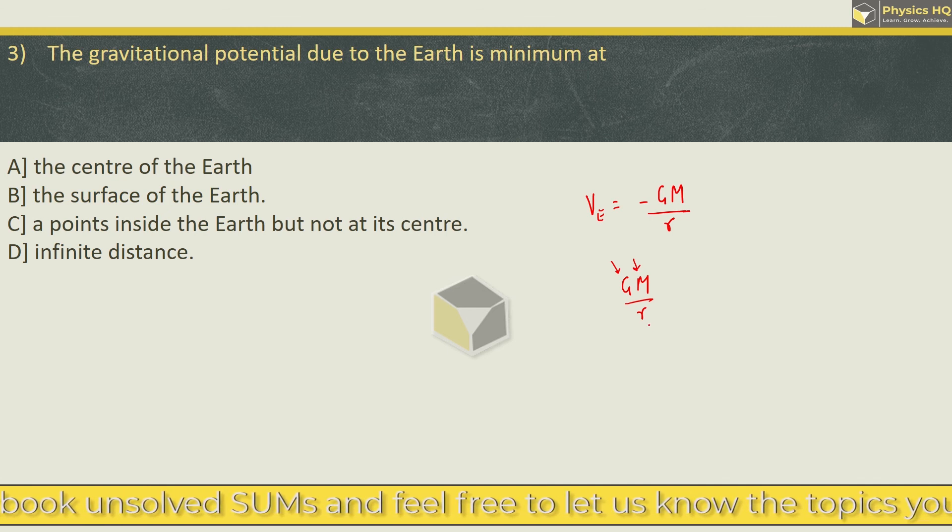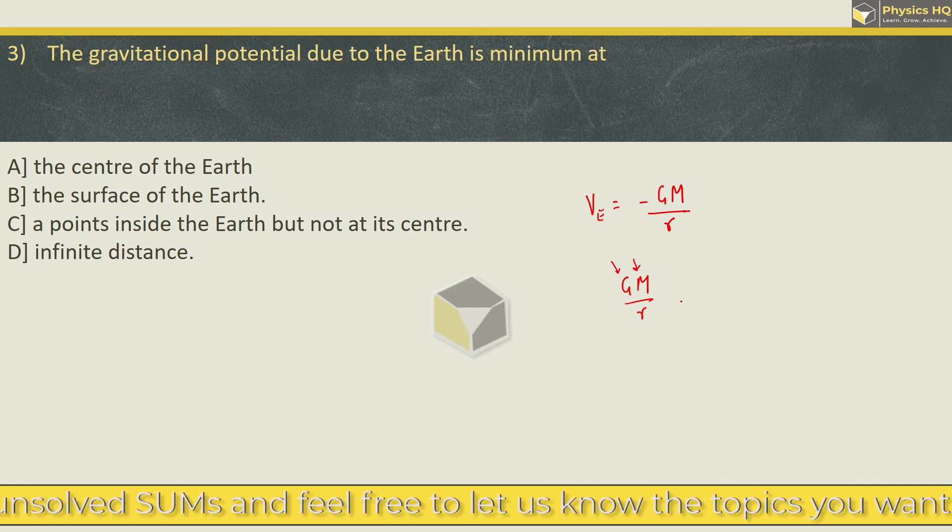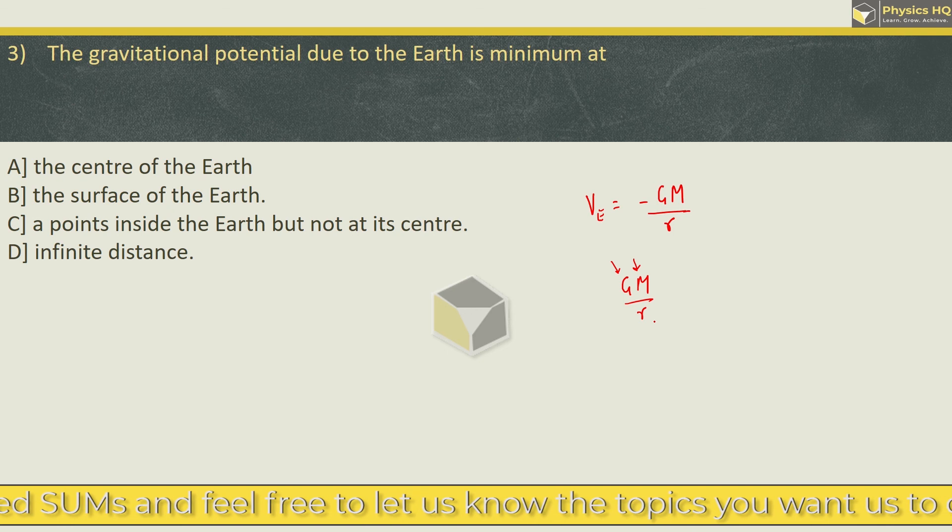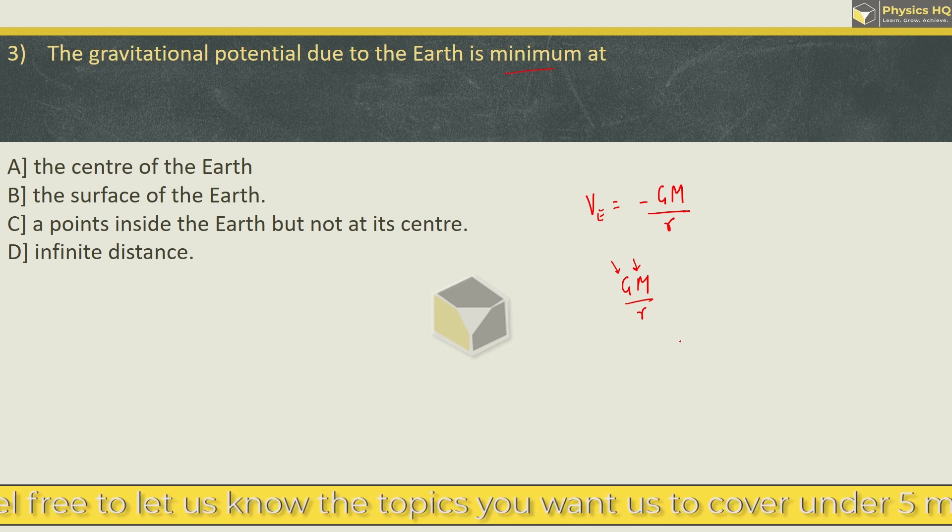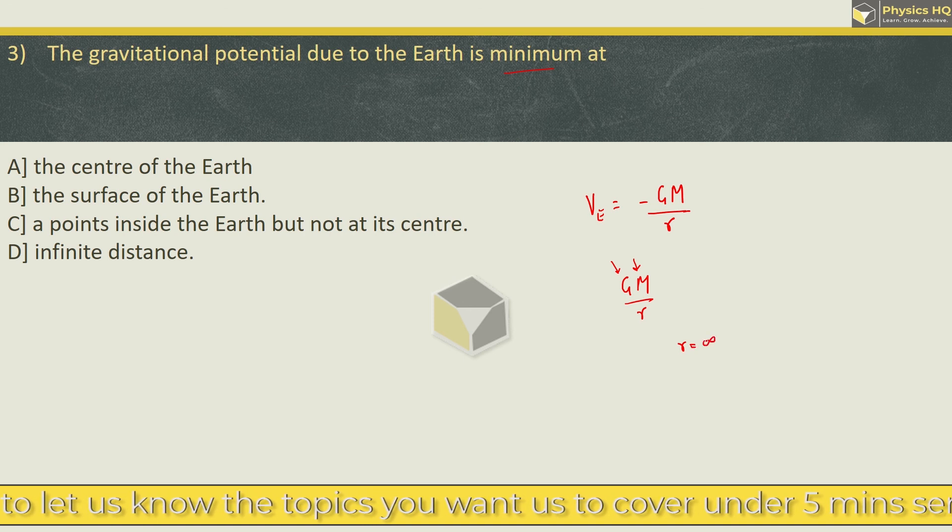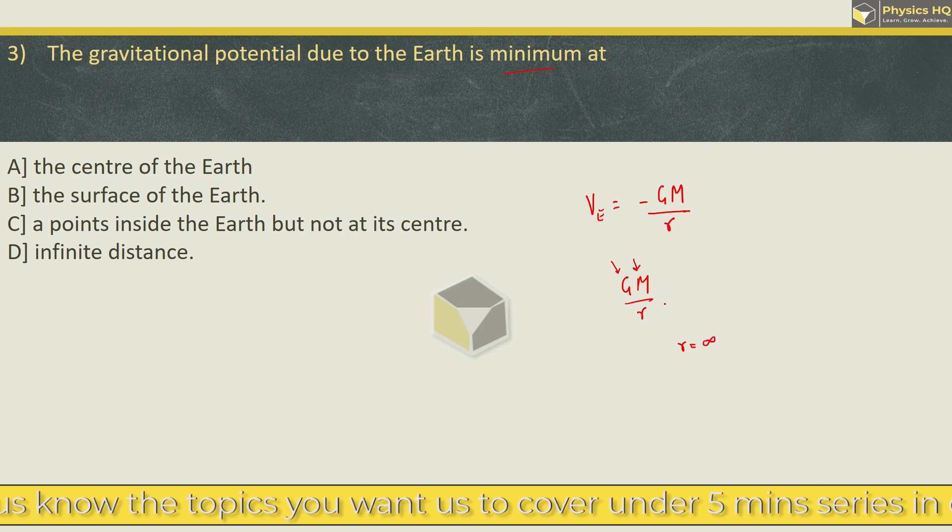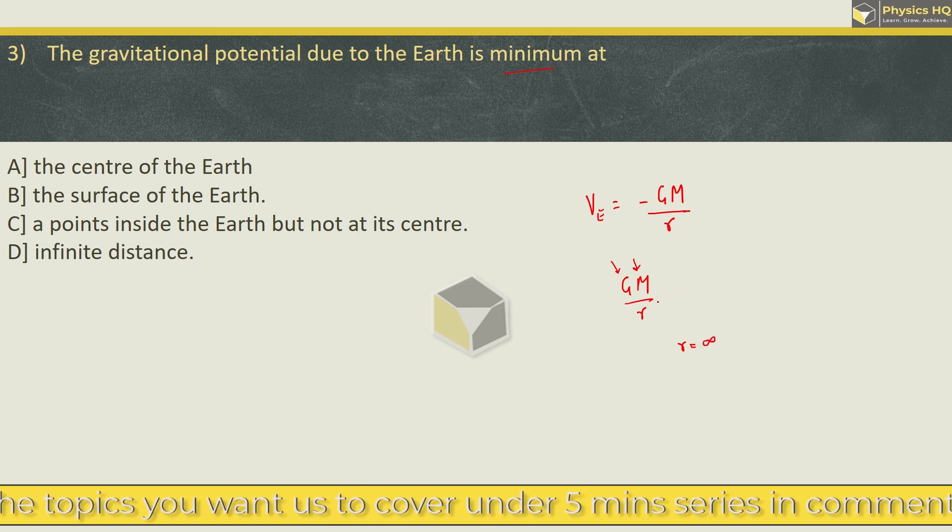So as the distance R will decrease, the value of potential will increase. But we want to find out the minimum value. So when R ka value is equal to infinity, this ratio will be GM upon infinity which is equal to zero.